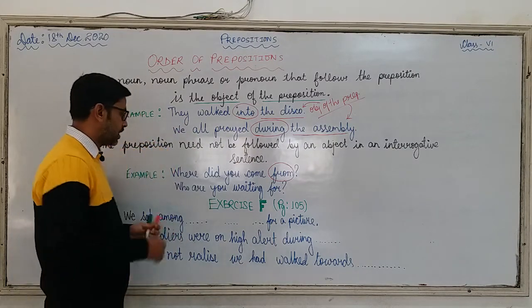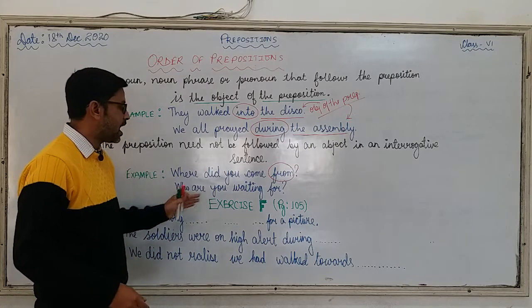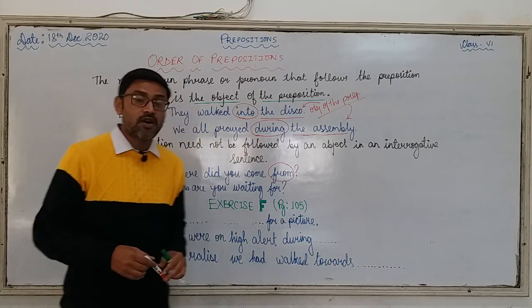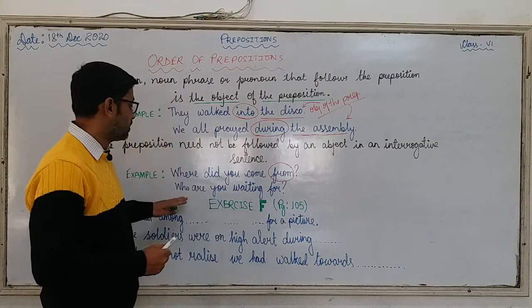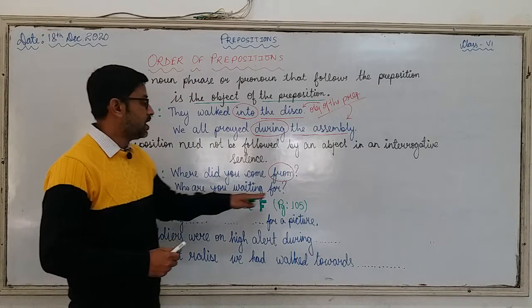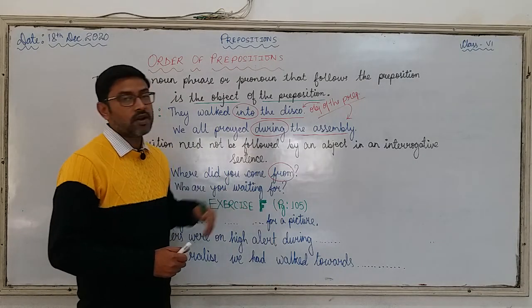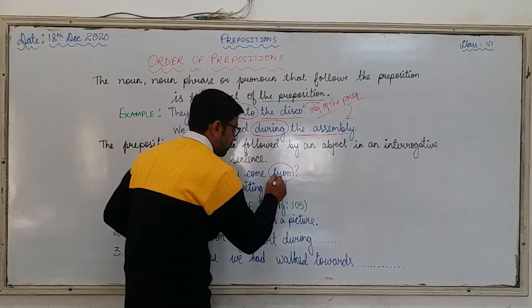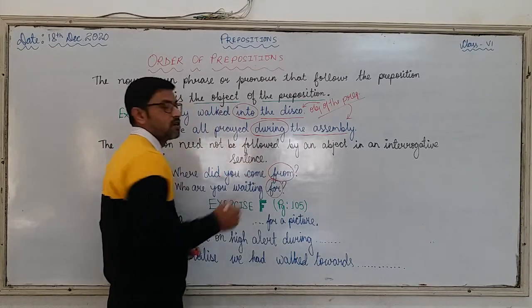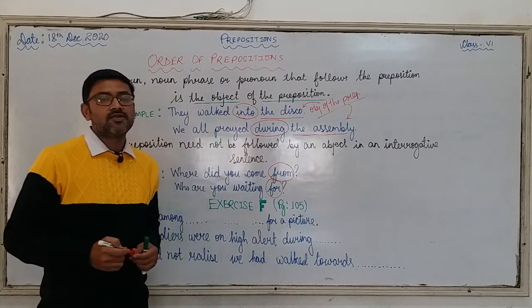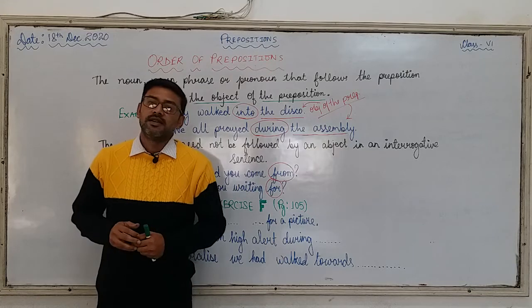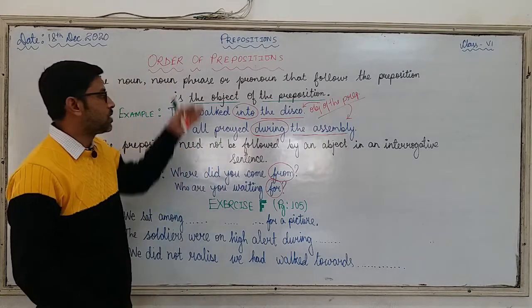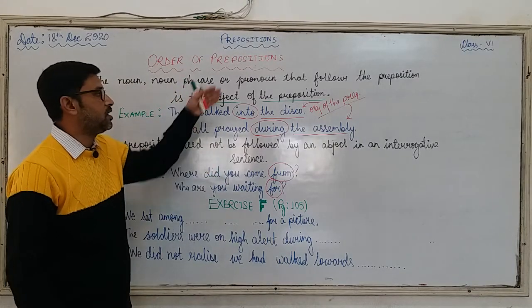In the next example: 'Who are you waiting for?' This is a question. 'For' is the preposition we have learned. Since it is an interrogative sentence, it is not followed by an object of the preposition. So these are the two types we need to remember: in affirmative sentences the preposition is followed by its object, while in interrogative sentences it need not be.